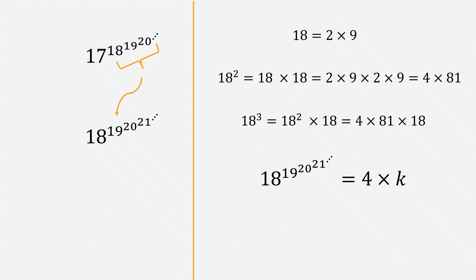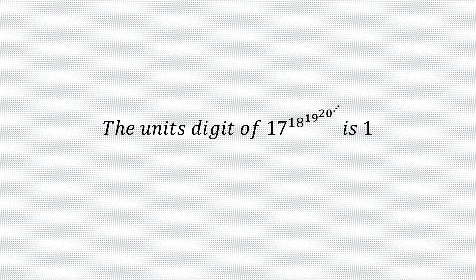We can now be confident that the power of 17 in this question is a multiple of 4. And since it's a multiple of 4, from our earlier analysis, 17 raised to a multiple of 4 ends in 1. So we conclude that the unit digit of 17 to the power 18 to the power 19 to the power 20 and onwards is 1, because 18 to the power (19 to the power 20) is a multiple of 4, and whenever a number ending in 7 is raised to a multiple of 4, the unit digit is 1.